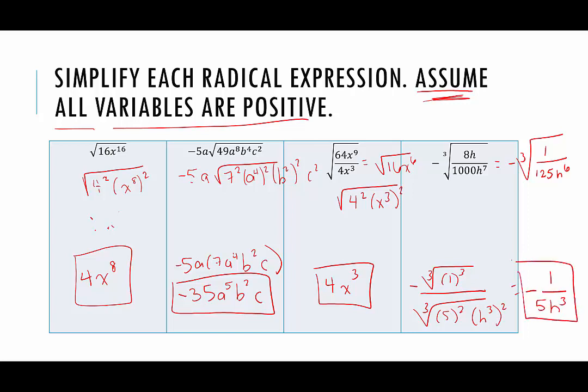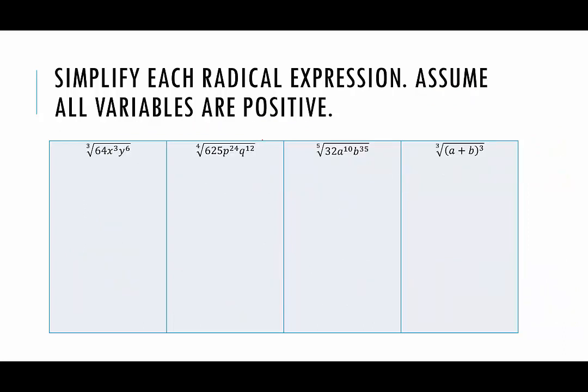Now let's look for a pattern with the variables. We had x to the 16th and it became x to the 8th — 8 is half of 16. Here we had a to the 8th and it became a to the 4th — 4 is half of 8. And 2 is half of 4, and 1 is half of 2. So it looks like there is a pattern that emerges: the exponent is being divided by the index. Let's see if that shortcut continues with the last four examples.